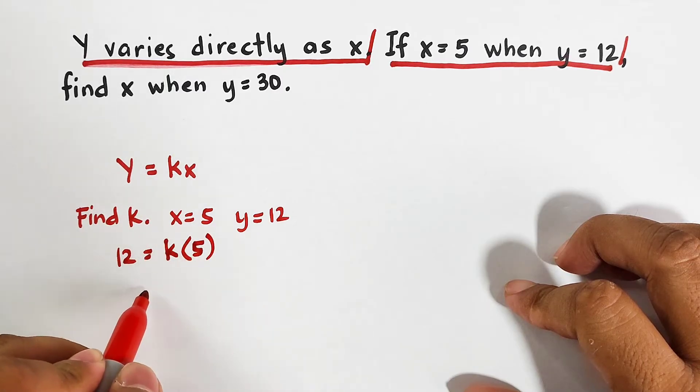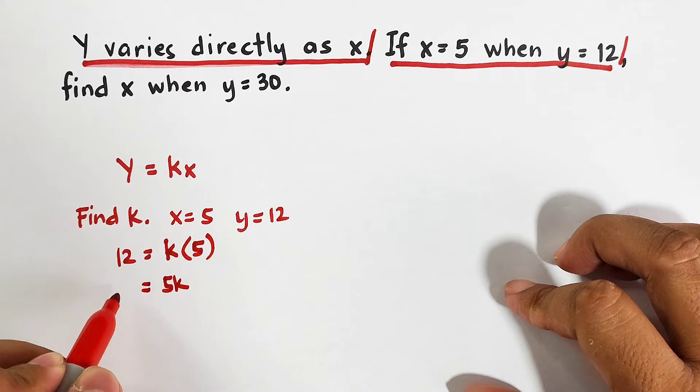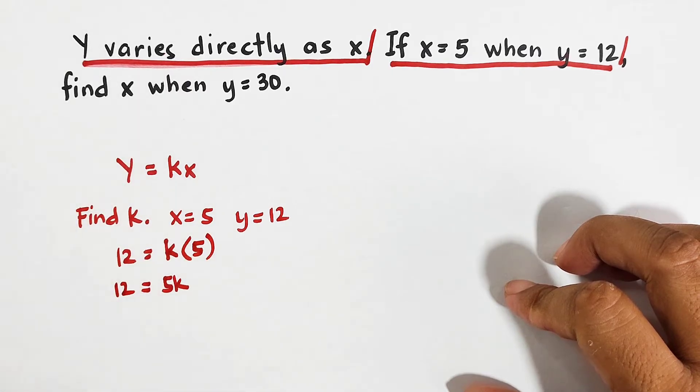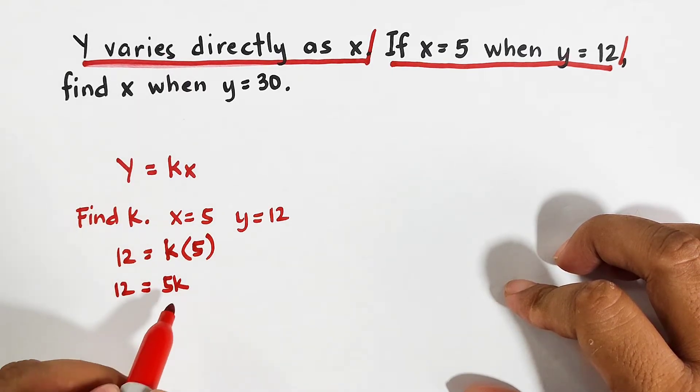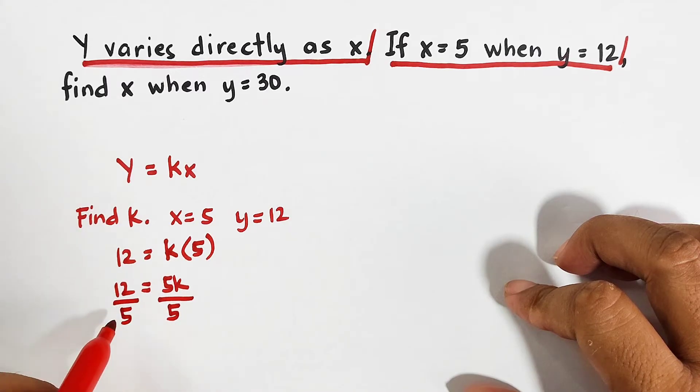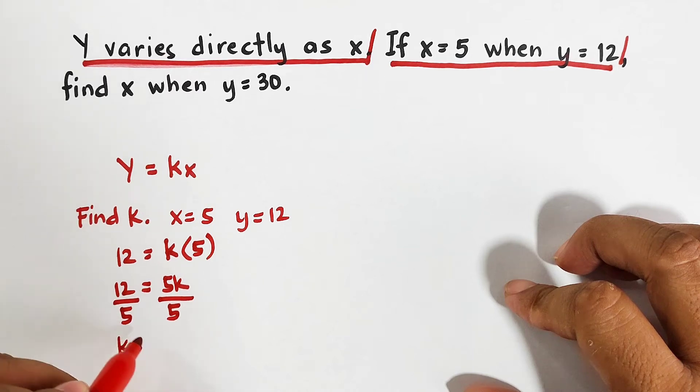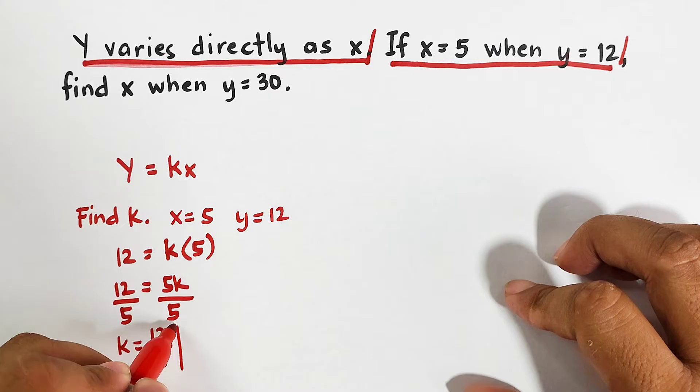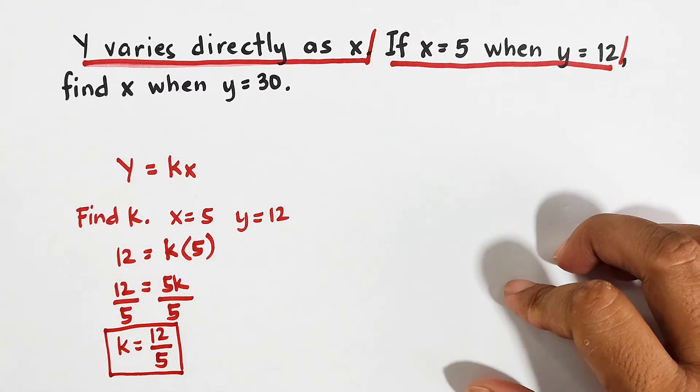Or 5k is equal to 12. And then, to find the value of k, we will divide this by 5 and by 5, and it will give us the answer, your k is equal to 12 over 5. This is now the value of the constant of variation.